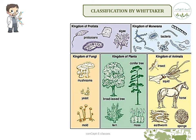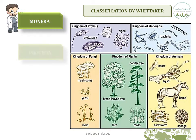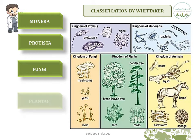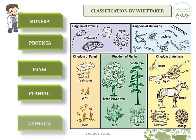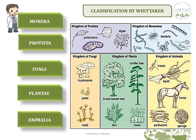Whittaker classified all living organisms based on major characteristics like whether they have a nucleus, a cell wall, whether cells are unicellular or multicellular, and whether they are autotrophs or heterotrophs. Based on all this, he classified all living organisms into five kingdoms: Monera, Protista, Fungi, Plantae, and Animalia. We have already studied up to Plantae, so let's now look at Animalia.